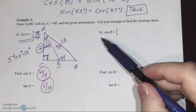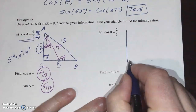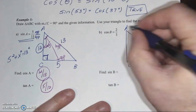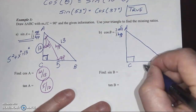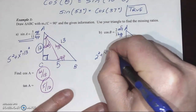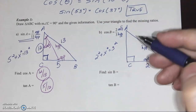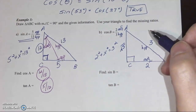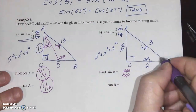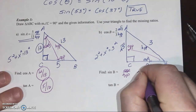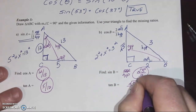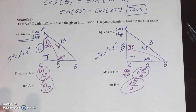With all three sides known, cosine of A is adjacent over hypotenuse: 12 over 13. Tangent of A is opposite over adjacent: 5 over 12. Pause the video and take your shot at part B. Cosine of angle B is adjacent over hypotenuse — from angle B the adjacent is 2 and the hypotenuse is 3, so 2 over 3. We use the Pythagorean theorem to get the missing side, which is the square root of 5. Sine of B is opposite over hypotenuse: root 5 over 3. Tangent of B is opposite over adjacent: root 5 over 2. Hopefully you nailed it — if you have questions, bring them to office hours.